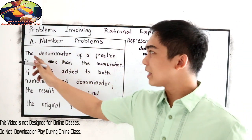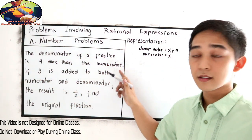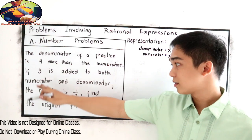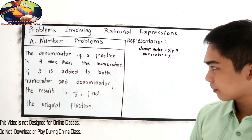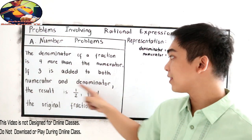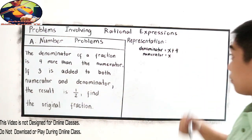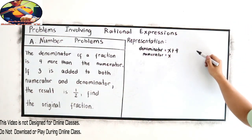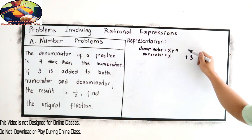After getting the information of our first sentence, proceed in our second sentence. If three is added to both numerator and denominator, so if we're going to add three for numerator, I'm going to add three to numerator and add three to the denominator. So let us simplify.